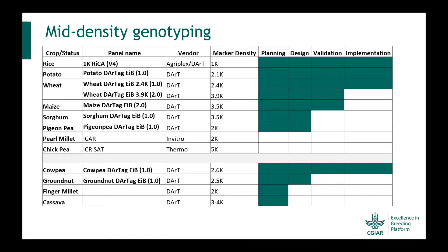There are also other platforms available externally — especially pearl millet, where the ICAR team is involved in developing a 2K array, and a 5K array for chickpea available with ICRISAT. I would also like to include crops not primarily targeted through this ICAR BMG project but may be of interest: cowpea, groundnut, and also finger millet and cassava, which are currently under discussion.